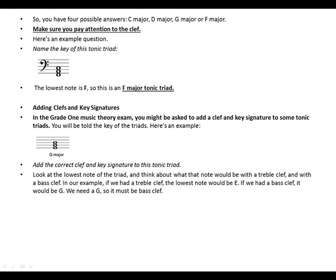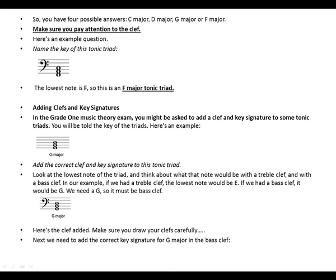We need a G, so it must be bass clef. Here's our finished example. Here's the clef added. Make sure you draw the clef carefully. Next we need to add the correct key signature for G major in the bass clef, and there we have the sharp on F.